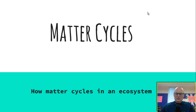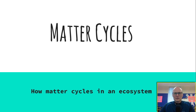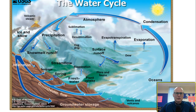Matter cycles in an ecosystem. The three main matter cycles we'll talk about are water, carbon, and nitrogen. There are others — Crash Course and Hank Green cover some of the other matter cycles — but we'll just stick to the big three for this lecture.